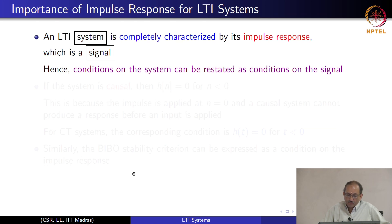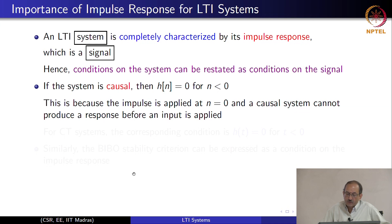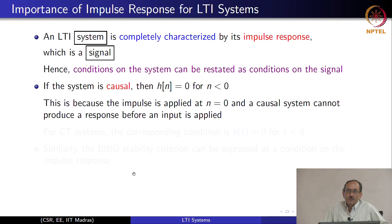Coming back to conditions on the system being translated as conditions on the impulse response: one of the most important is causality. If the system is causal, then h of n must be zero for n less than zero. This is because the impulse is applied at n equals zero, and a causal system cannot anticipate the impulse and cannot produce a response before it is applied. Therefore the response necessarily begins at n equals zero and onwards, and the condition on the system is translated to a condition on the impulse response.